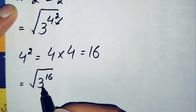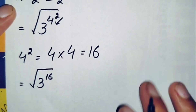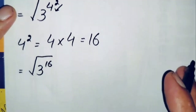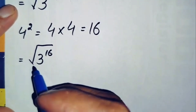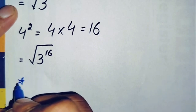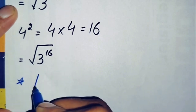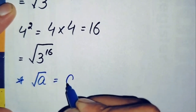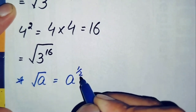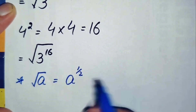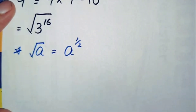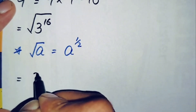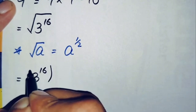Next, we convert the square root to its equivalent fractional exponent. We use the property that the square root of any number a can also be written as a raised to power 1 over 2, since the square root is equivalent to the exponent one-half. So this becomes 3 raised to power 16, whole raised to power 1 over 2.